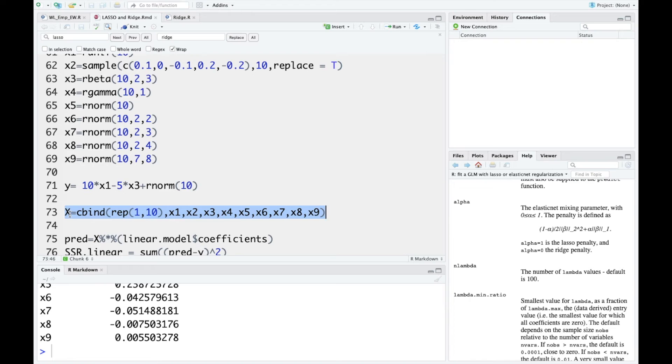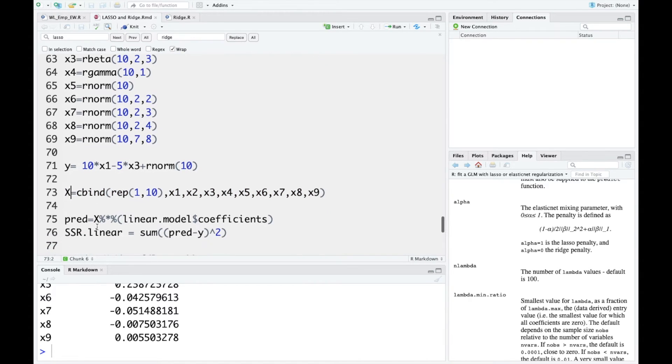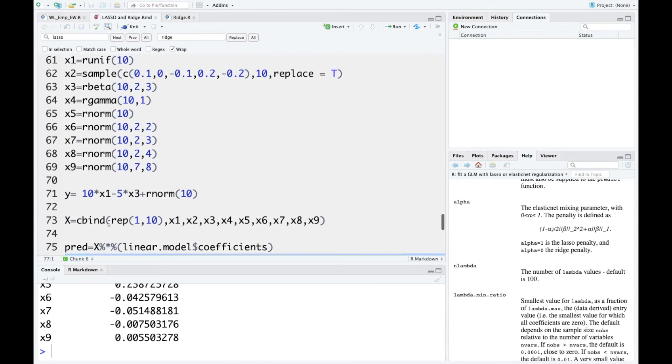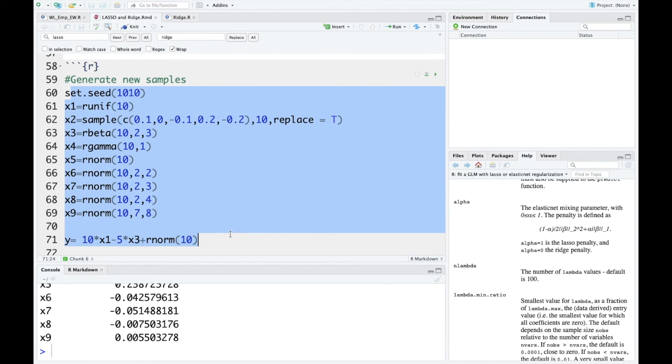So with X, which are the independent variables, you can multiply it to the coefficients estimated by each of the prediction models, get the prediction for each model, and then compute the difference between the prediction and Y, square it, and take sum of it. So when you sum it up, you will get the sum of square of residuals, or in short, SSR. So you can get SSR for each of the prediction models, for the new sample that you have just generated. So here we can run the whole chunk.